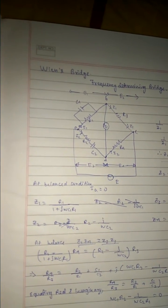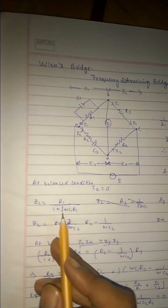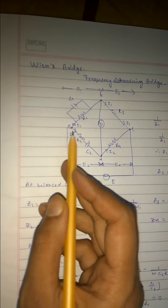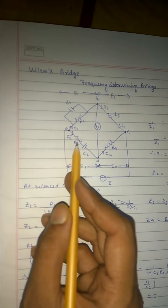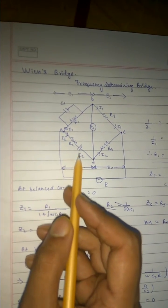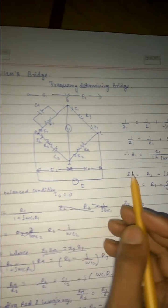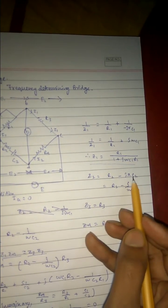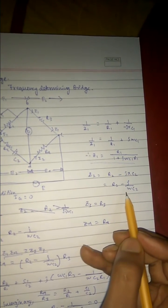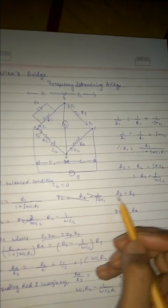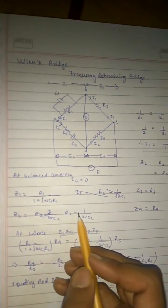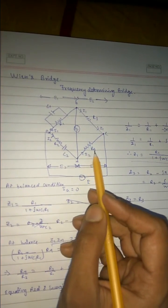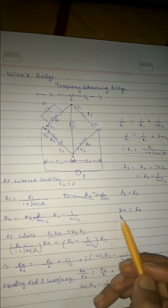Similarly for z2, this R2, this is in series, so R2 minus j·Xc2. z2 equals to R2 minus j·Xc2. Xc2 is same as j by omega C2. So z2 equals to R2 minus j by omega C2. z3 is nothing but R3. z4 impedance is nothing but R4.